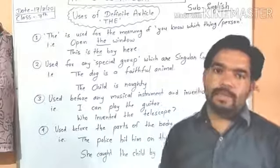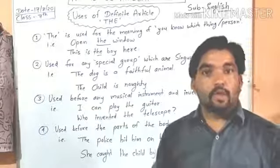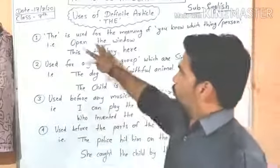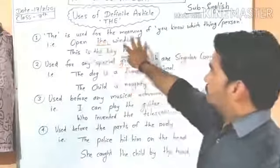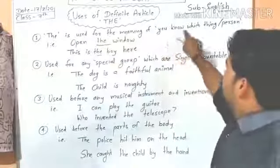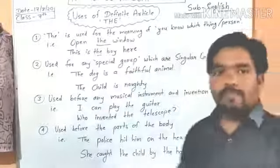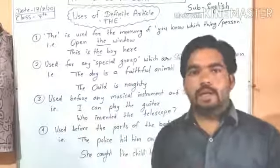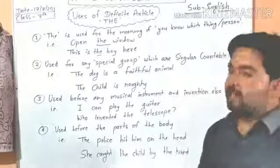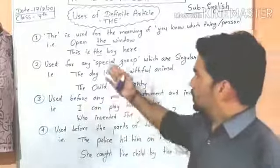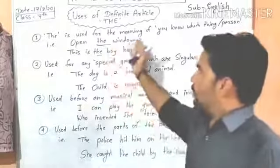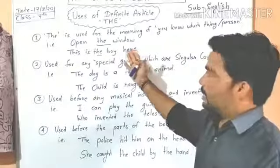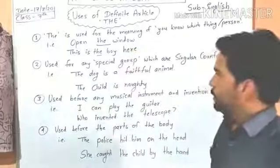The first use: 'the' is used when you know which specific thing or person is being referred to. For example: 'Open the window' — here you know which window. 'This is the boy here' — one specific person is related to this use.